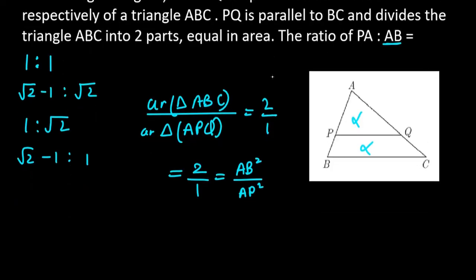Taking the square root of both sides, we get AB over AP equals root 2 over 1.